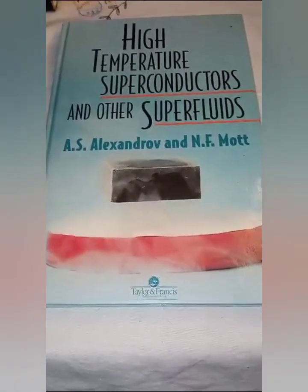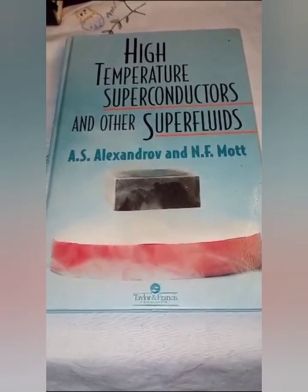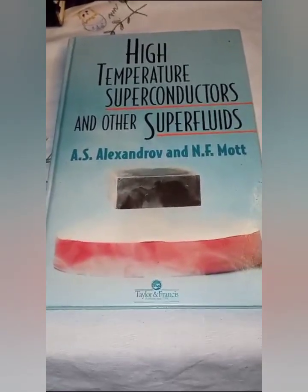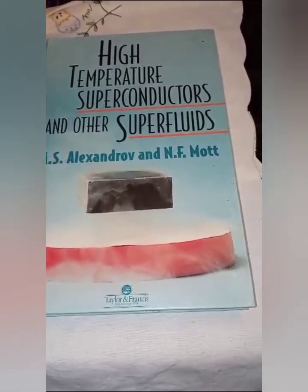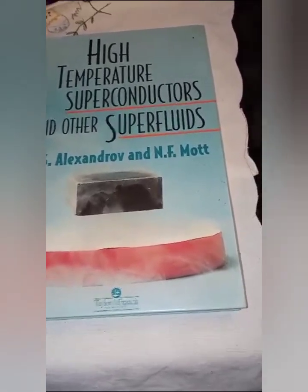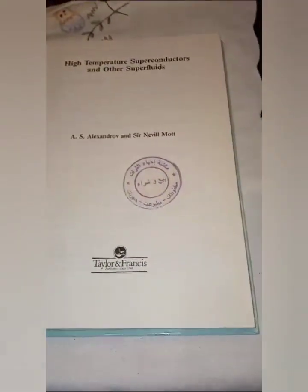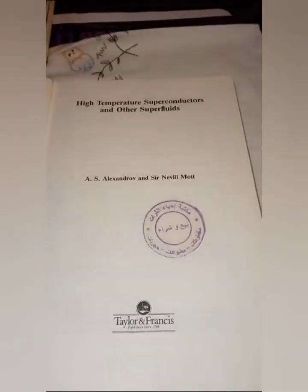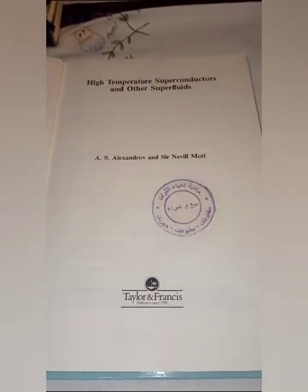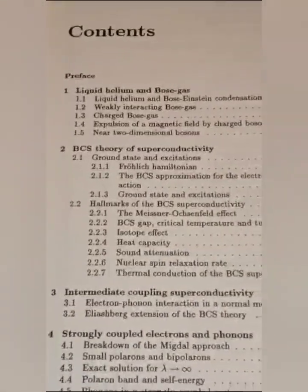By Alexandrov and Sir Nevill Mott, Nobel Prize in Physics in 1977. This monograph is very interesting. Here is all the breed of great physicists like Nevill Mott, Sir Nevill Mott, and Charles Kittel. High temperature superconductors and other superfluids by Alexandrov and Sir Nevill Mott. This book contains seven chapters.